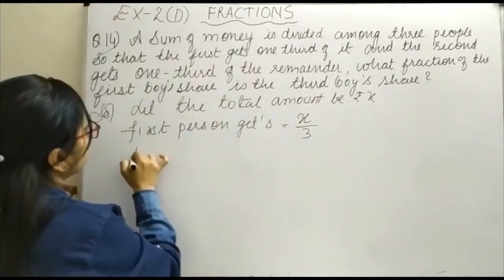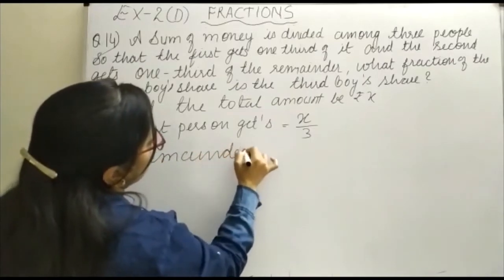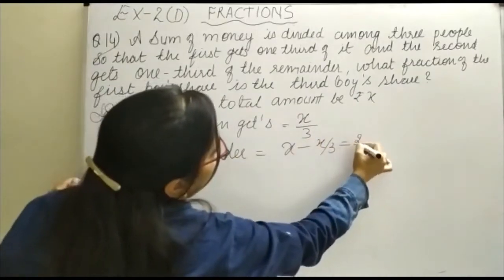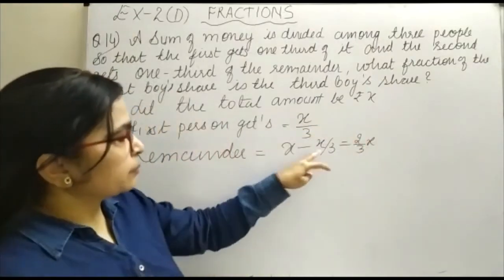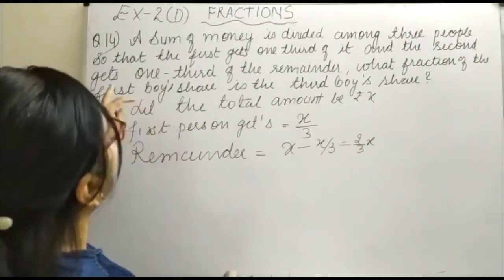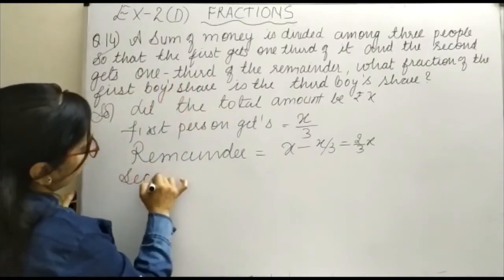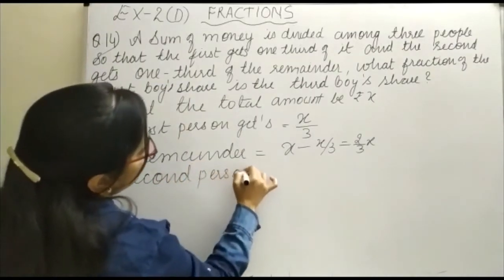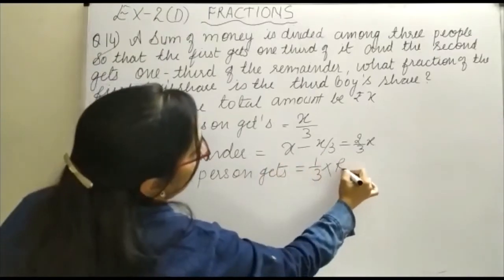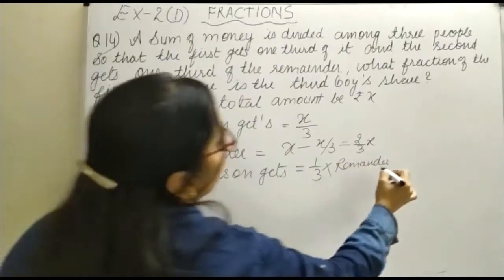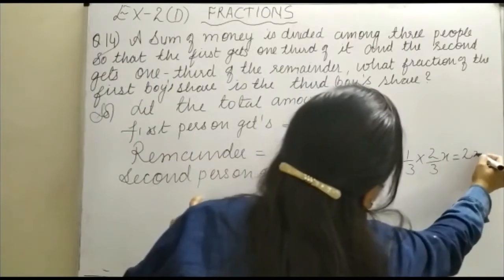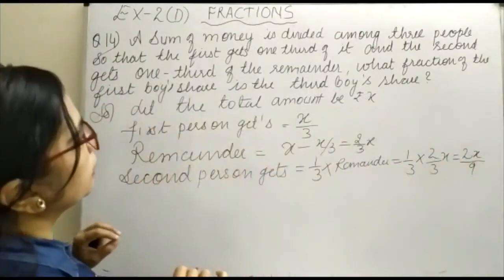The remainder is equal to x total minus x upon 3, that is three x minus x, which is two x upon 3. It is said that the second person gets one third of the remainder. Therefore, the second person gets one third into remainder, which is one third into two upon three x, and that is equal to two x upon 9.